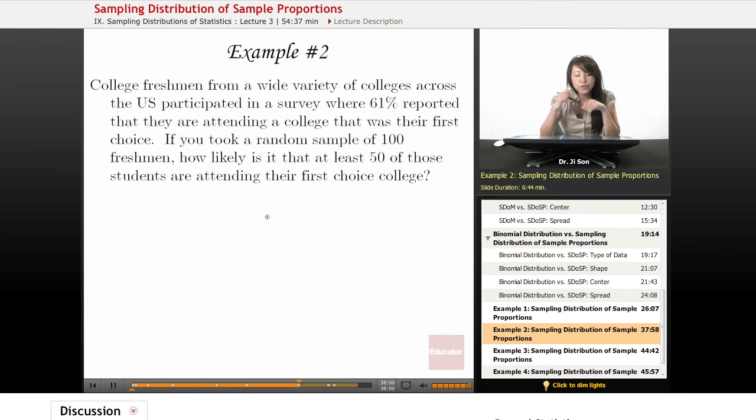Example two, college freshmen from a wide variety of colleges across the U.S. participated in a survey where 61% reported that they are attending a college that was their first choice. If you took a random sample of 100 freshmen, how likely is it that at least 50 of those students are attending their first choice college?